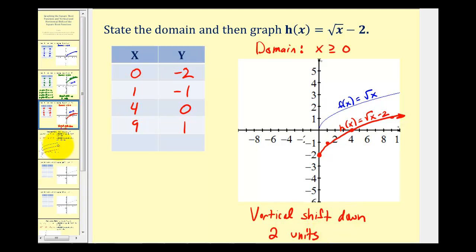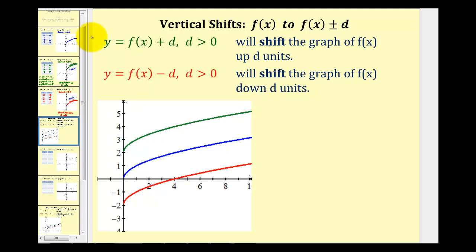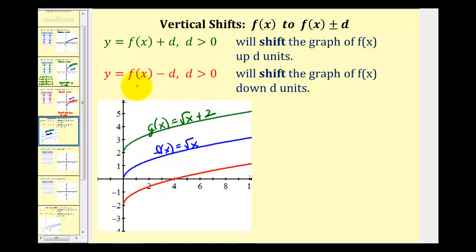Let's summarize what we discovered. If the parent function is f of x equals the square root of x, then y equals f of x plus d, where d is positive, shifts the graph up d units — that was g of x equals the square root of x plus two. And y equals f of x minus d shifts the graph down d units — that was h of x equals the square root of x minus two. So plus or minus d on the end represents a vertical shift.